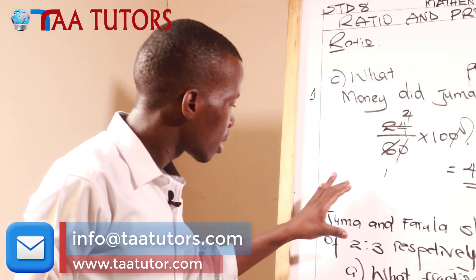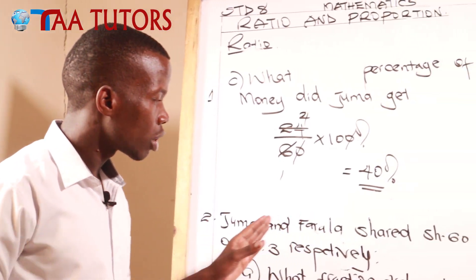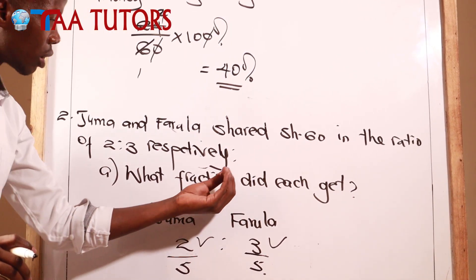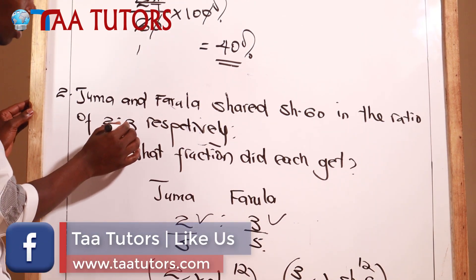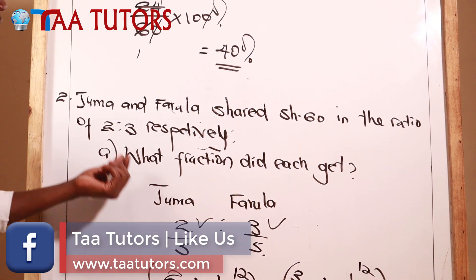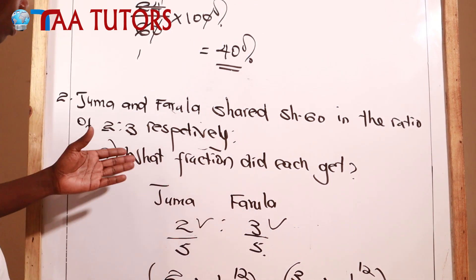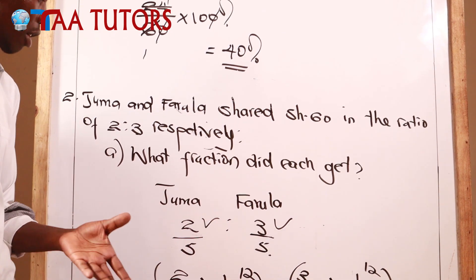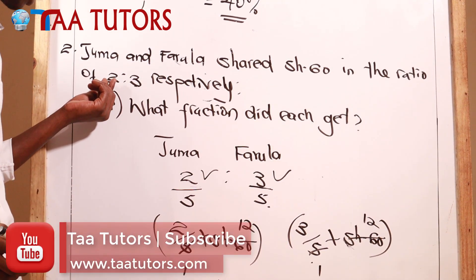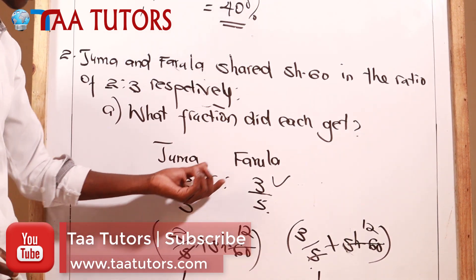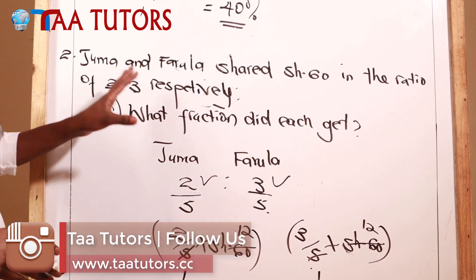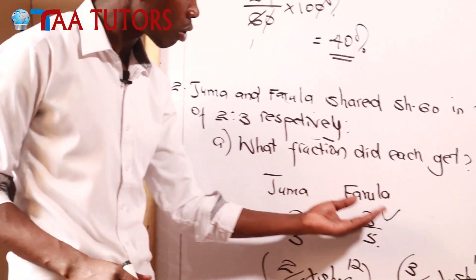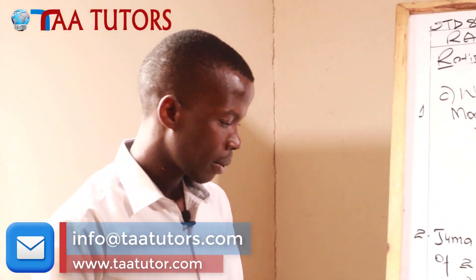Let me repeat the key steps once more. Juma and Farola shared 60 shillings in the ratio 2 to 3 respectively. To find each fraction: add 2 plus 3 to get total ratio 5, so Juma's fraction is 2 over 5 and Farola's is 3 over 5. To find each amount: multiply the fraction by 60 - Juma gets 24 Kenya shillings and Farola gets 36 Kenya shillings.